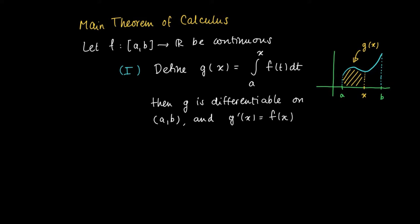So here it's clear the first part says if we have a continuous function f we may construct in fact a primitive of this function, since we defined g as a primitive of f.